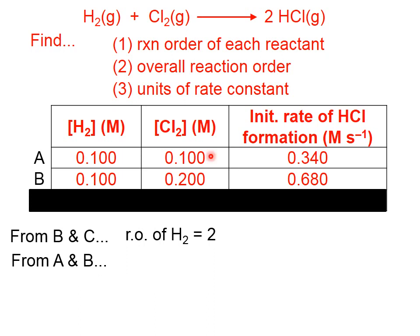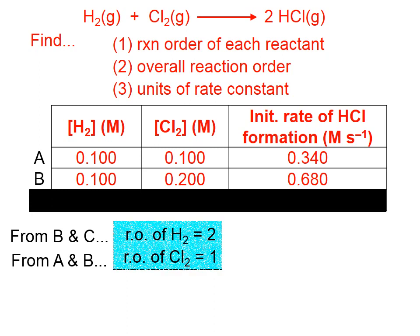We simply look at the data, and we say, chlorine concentration doubled, and the rate doubled. That's a proportional change, which means that the reaction order of chlorine will be one.